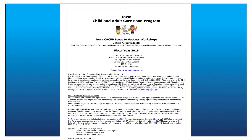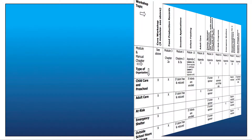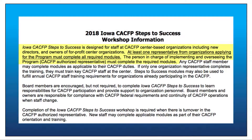The first step is to have at least one person from your organization complete all applicable modules of the CACFP Steps to Success Workshop. The required modules for your type of organization are listed on page 3 of the training flyer included in the application packet. The person designated as the authorized CACFP representative and the owner, if the organization is for-profit, must complete the training.